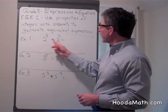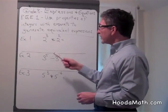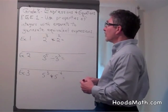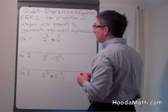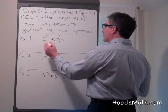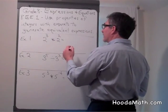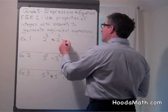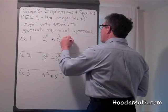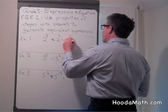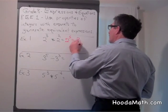So 2 to the third times 2 to the second. When the bases are the same, we add the exponents. So 2 to the third times 2 to the second equals 2 to the fifth power, which equals 32.